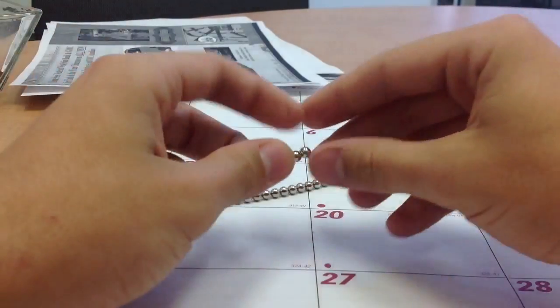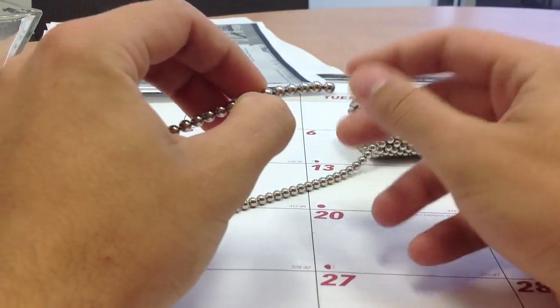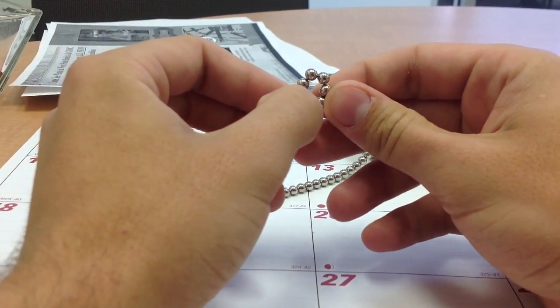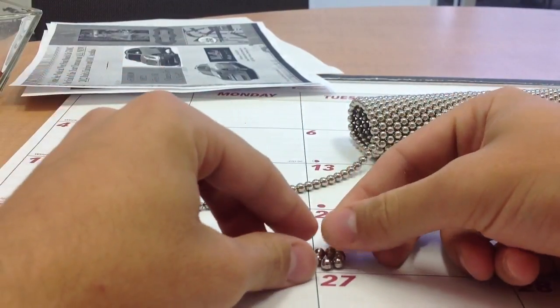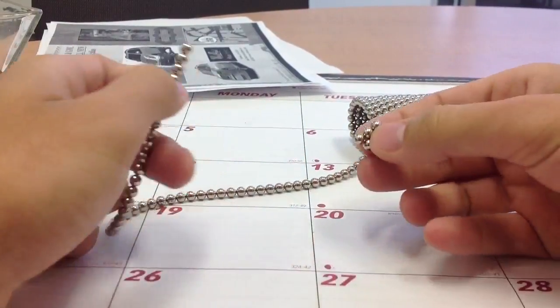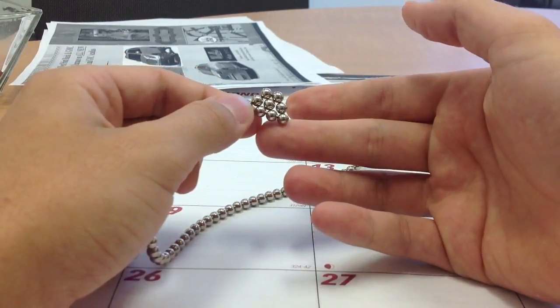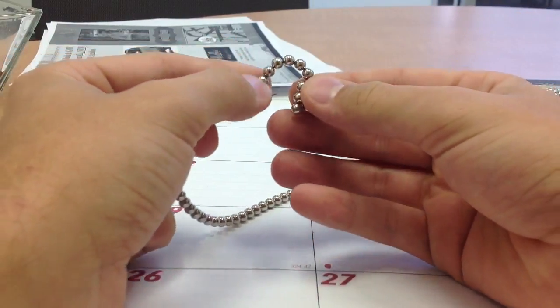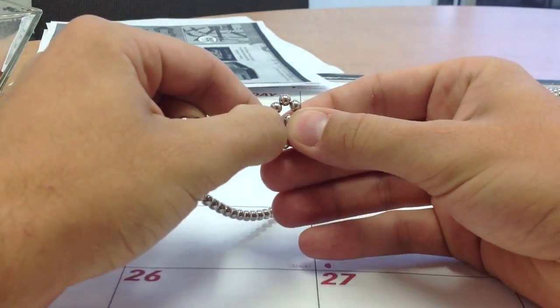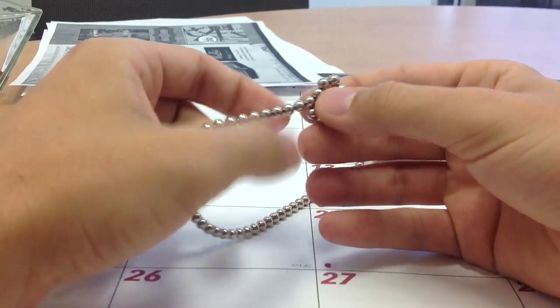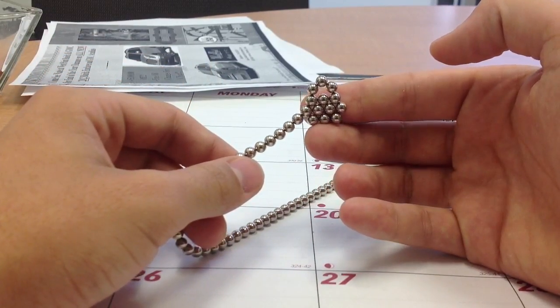Then next, you're going to take six dots, fold it, make a triangle out of it. Attach that. And then you're going to make a loop like that with three balls in the air like that.